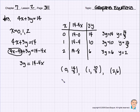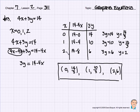So the solutions to this equation, 4x plus 3y is equal to 14, comes up with three ordered pairs. There's 0, 14 over 3, 1, 10 over 3, 2, and 6. So those are three ordered pairs that would work for that equation.